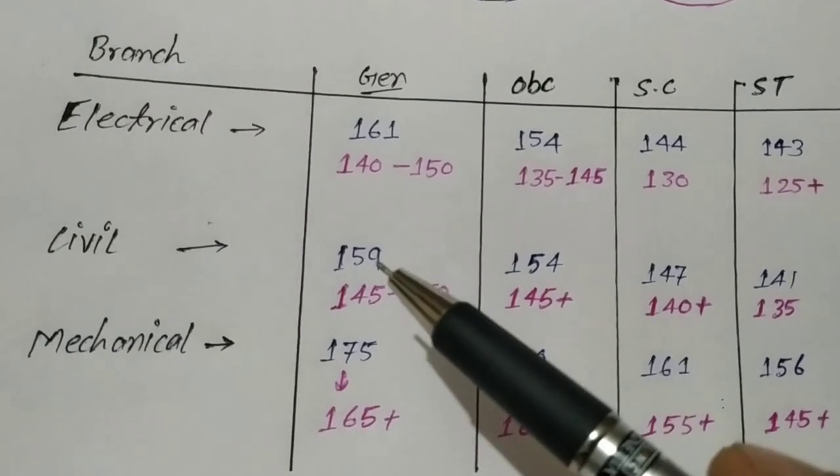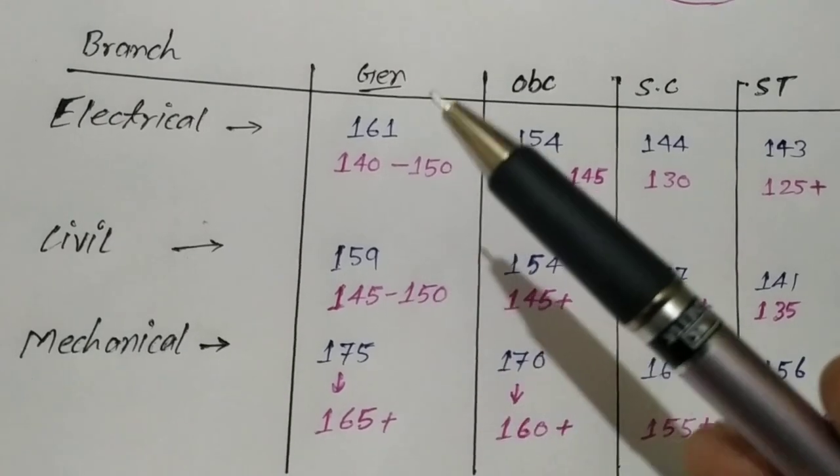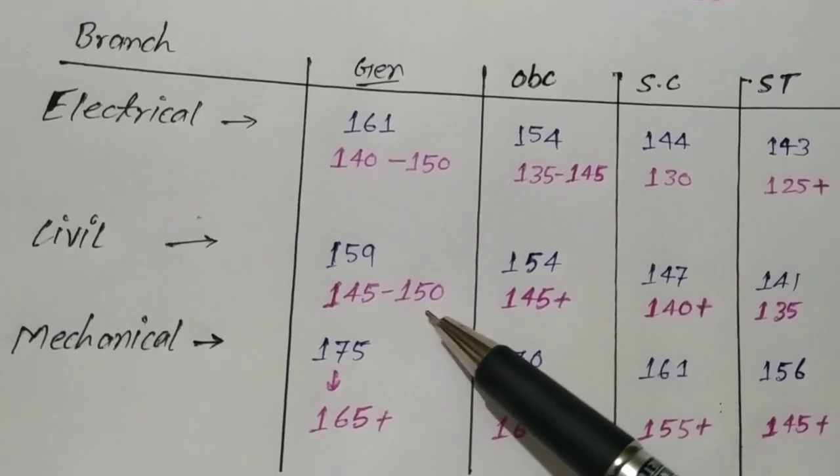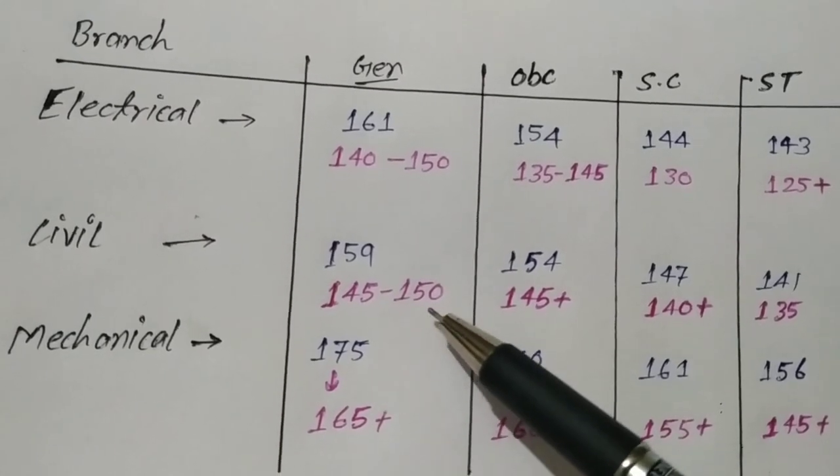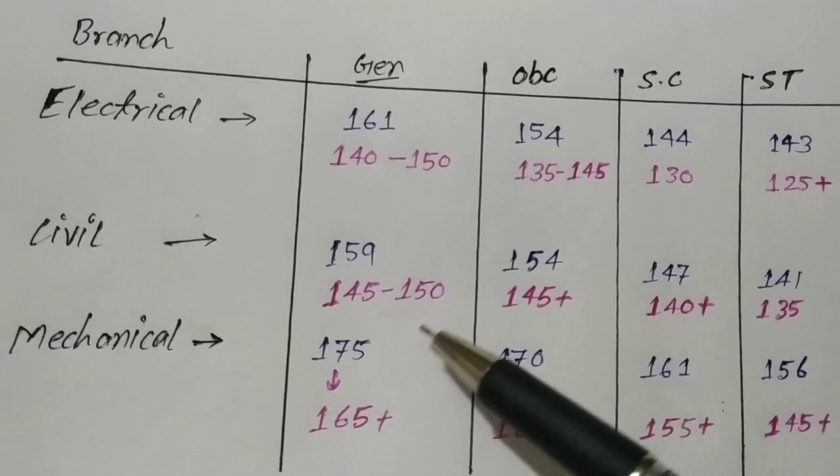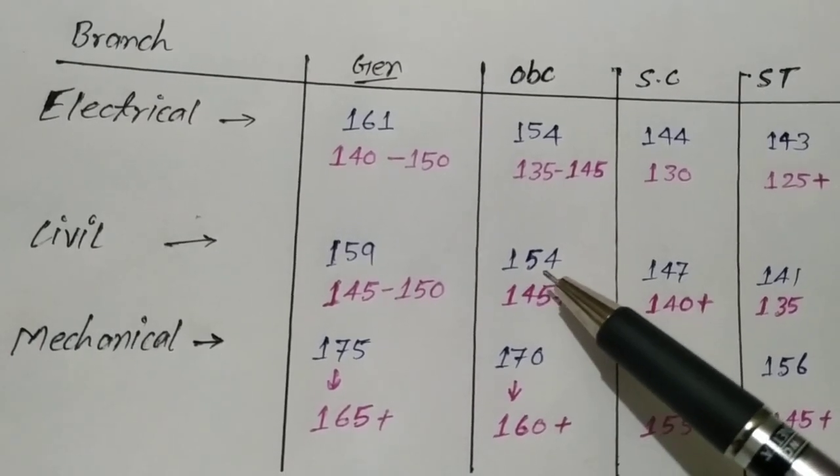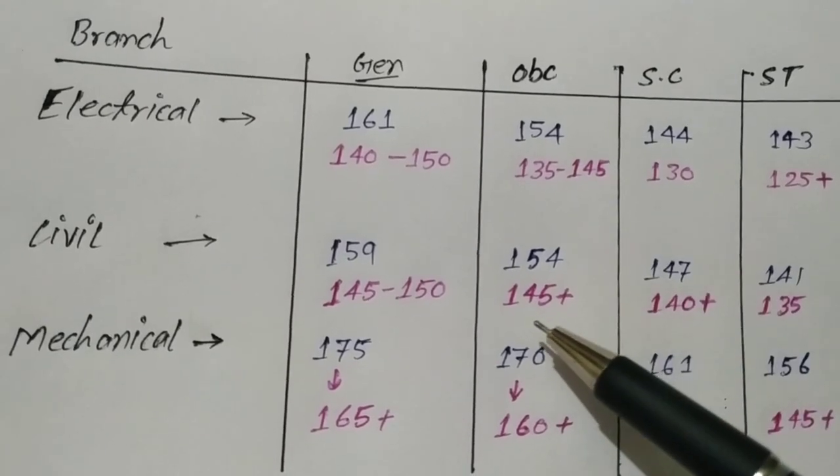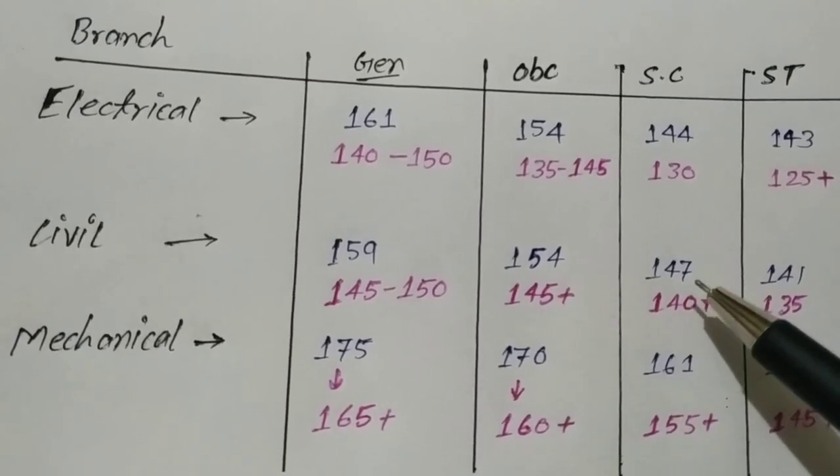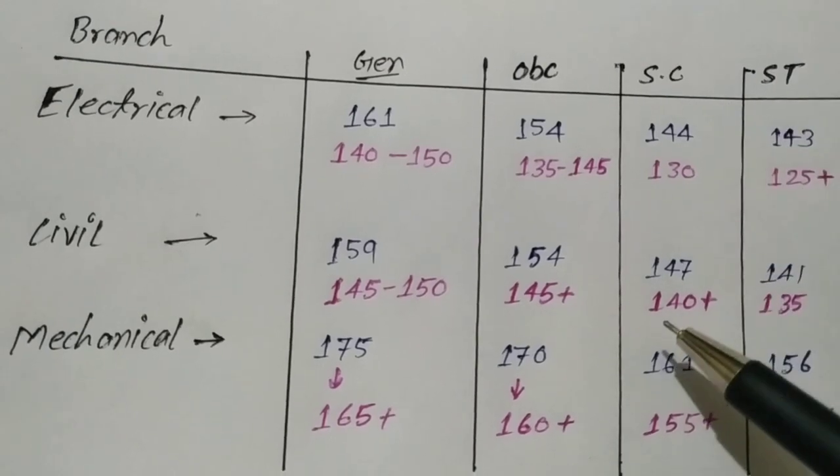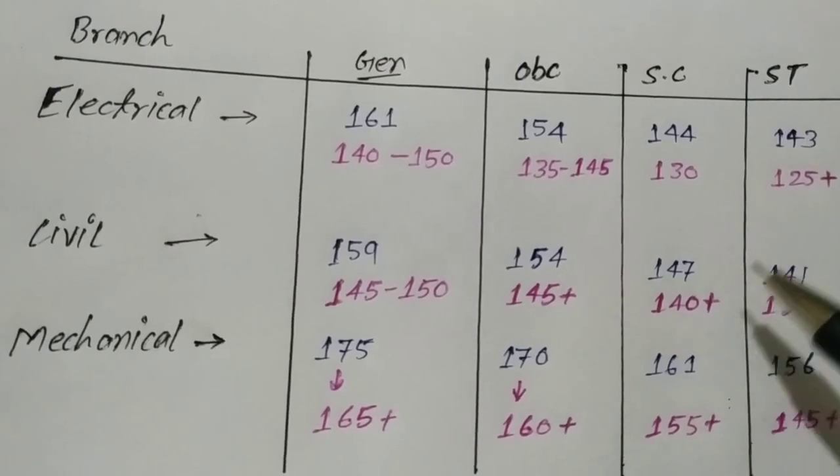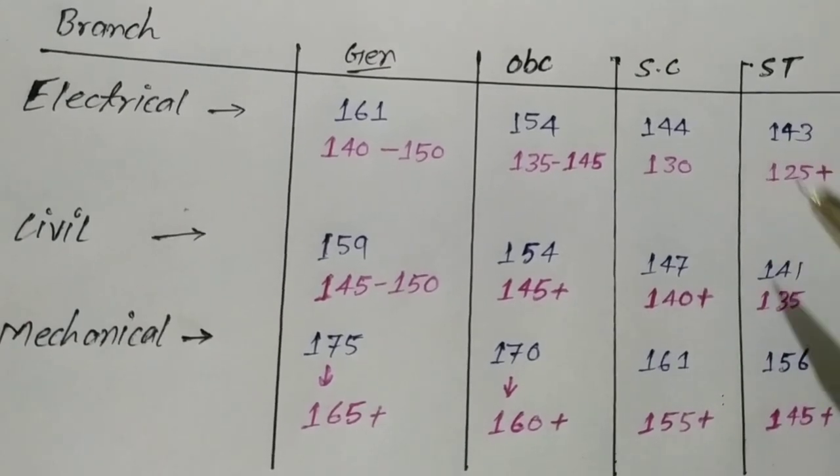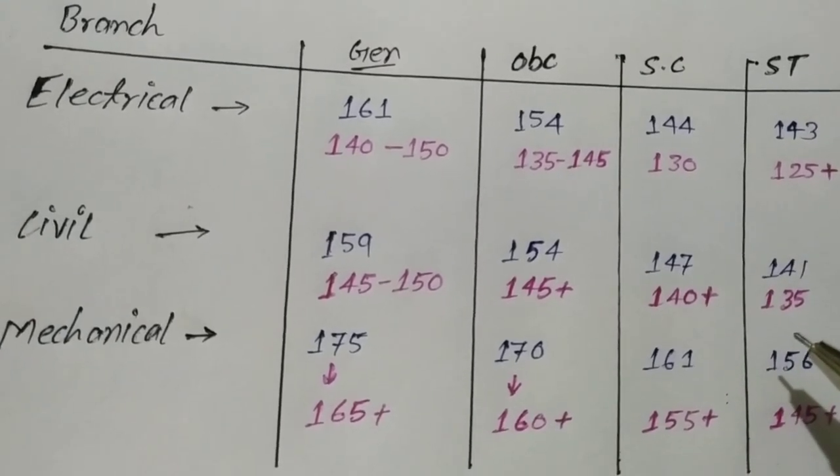For civil, in 2017 general was 159, expected 145 to 150; OBC was 154, expected 145 plus; SC was 147, expected 140 plus; ST was 141, expected 135.